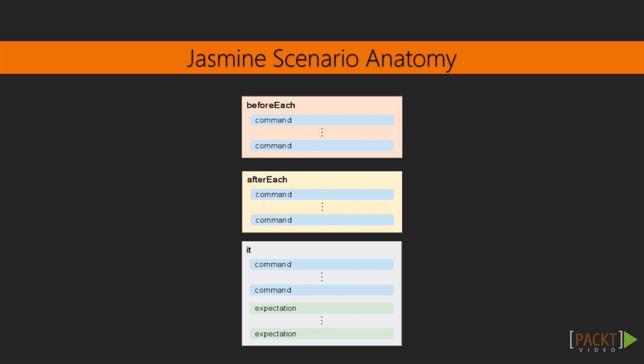When written with Jasmine, both unit and end-to-end tests have similar anatomy. A test suite is comprised of one or more it blocks that describe the requirements of your application. It blocks are made of commands and expectations. Commands tell the test runner — either Karma or Protractor — to do something with the application, such as run a specific function or click on a link. Expectations tell the test runner to verify and validate aspects about the application state, such as the value of a variable on scope or an input on screen. Tests may also contain helper functions to avoid duplicating code in the it blocks.